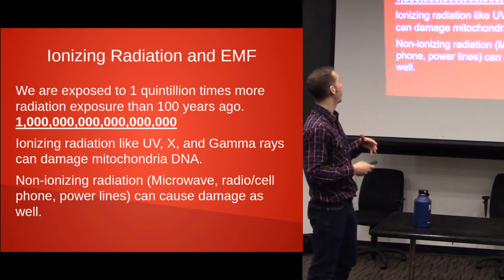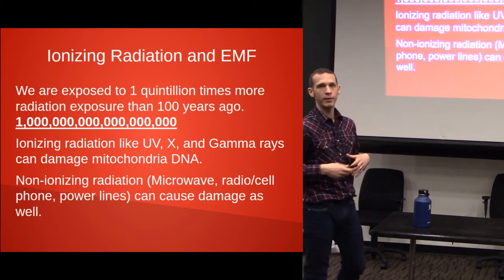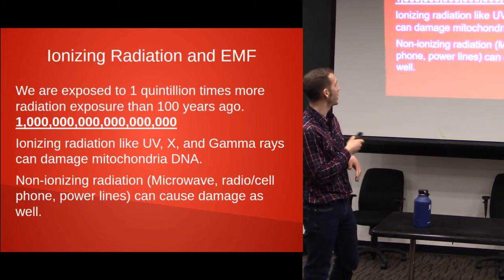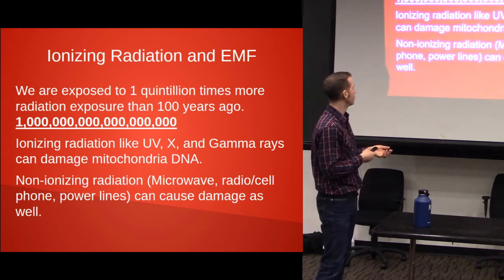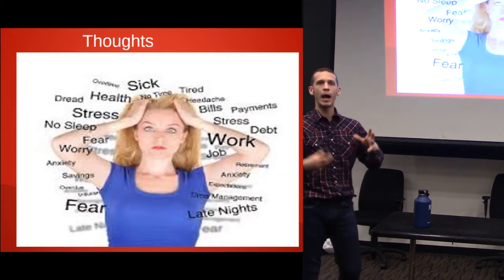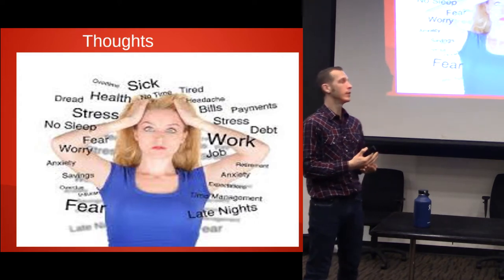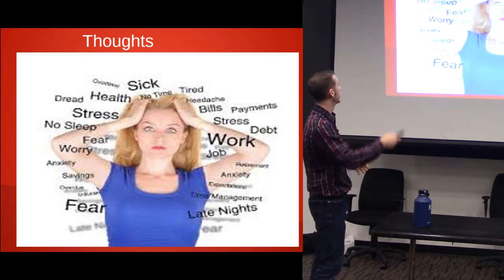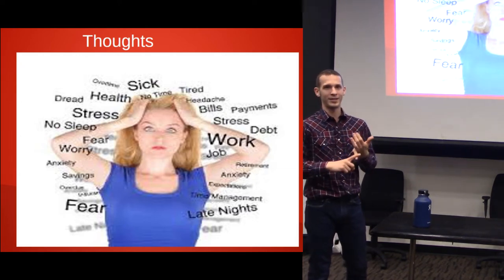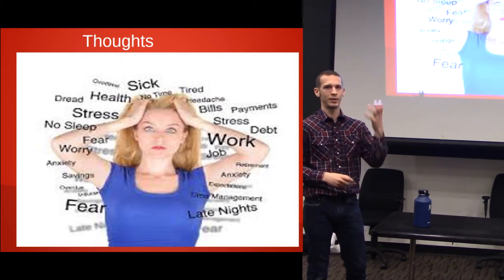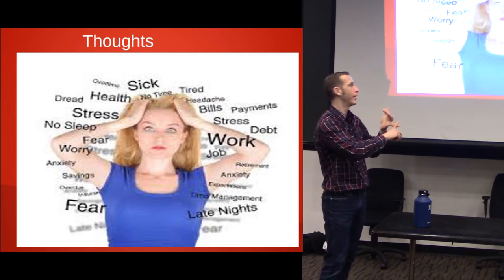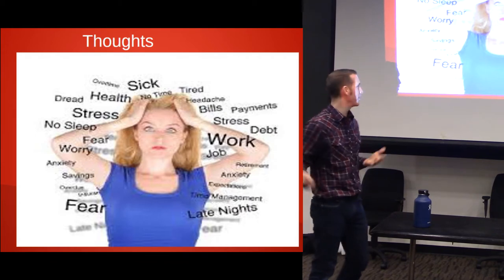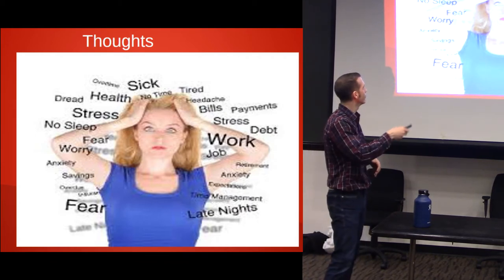Radiation and EMFs are increasing significantly — we're getting one quintillion times more radiation exposure than a hundred years ago. I'm going to focus really on nutrition tonight, so I'll briefly go over some of these other subjects. Regarding thoughts and stress: stress creates insulin resistance. That's another type of stress. Right now, for example, we have coronavirus and everybody's worried about that — so limit that stress.